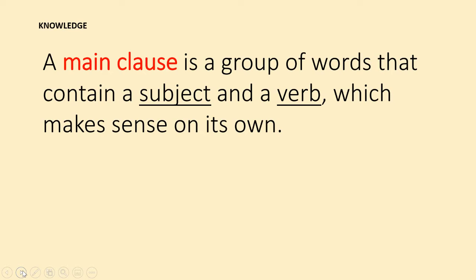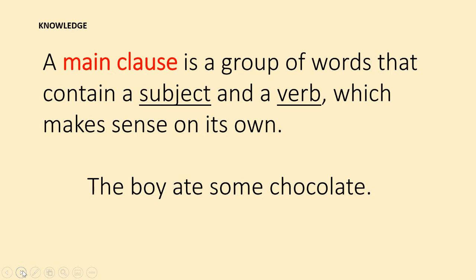Let's revisit: what is a main clause? A main clause is a group of words that contains a subject and a verb, and it makes sense on its own. For example: 'The boy ate some chocolate.' What is the subject? What is the verb? The subject is 'the boy' and the verb is a doing word — he ate. 'He ate some chocolate.' That is a main clause.